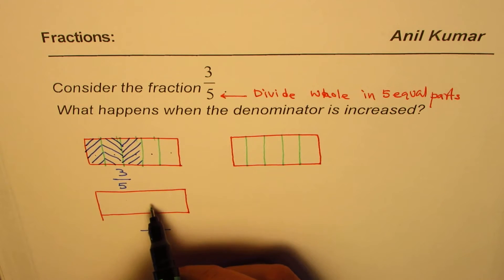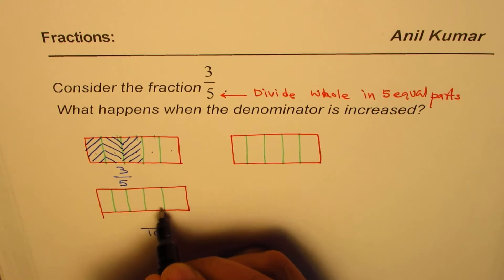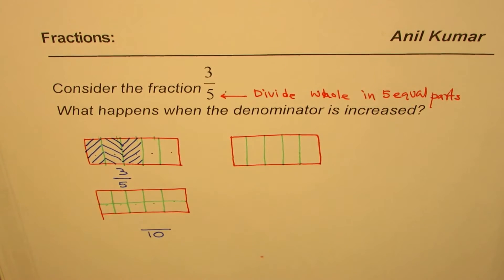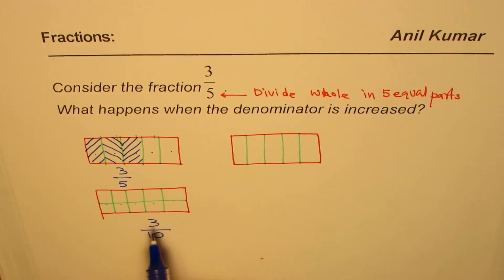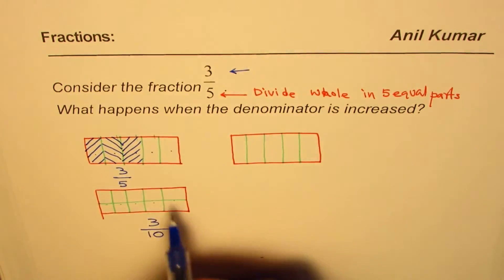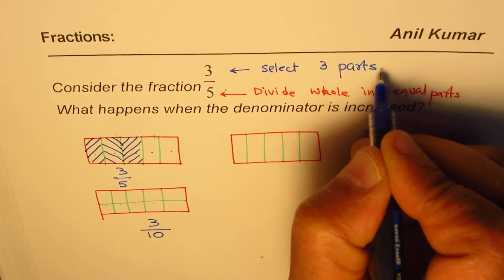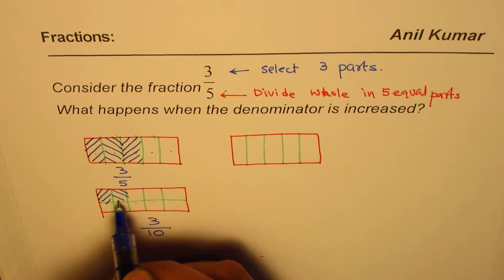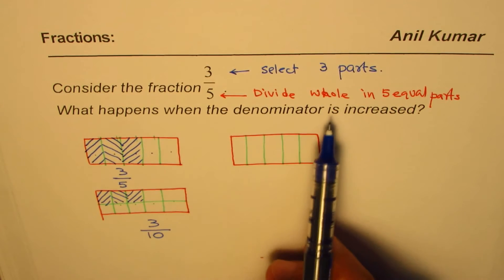If I make the denominator 10, I have to divide this whole into 10 equal parts. Let me do: one, two, three, four, five — and divide to make 10. We now have 10 equal parts. With the same numerator of three, we select three parts: one part, two parts, three parts.